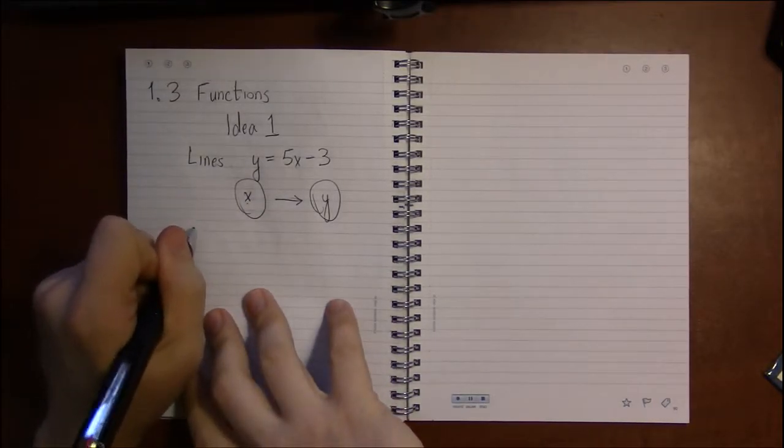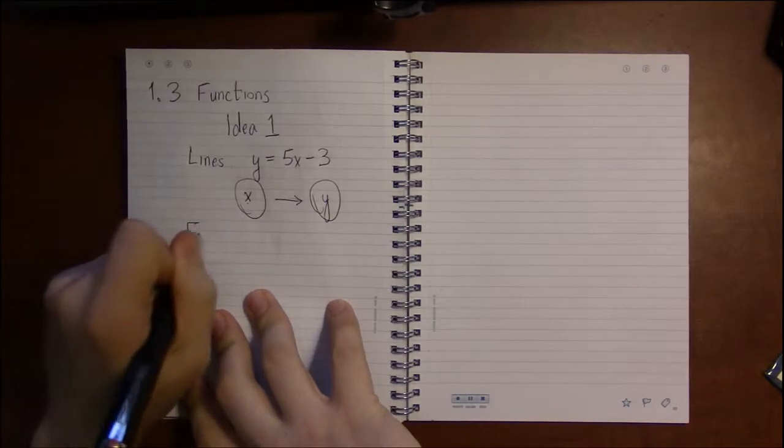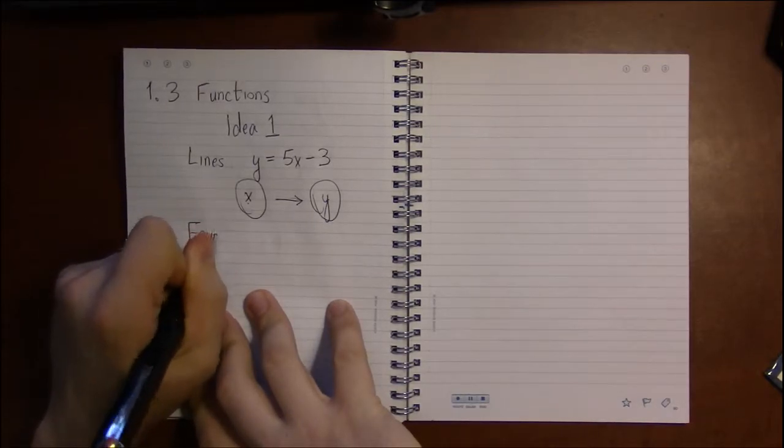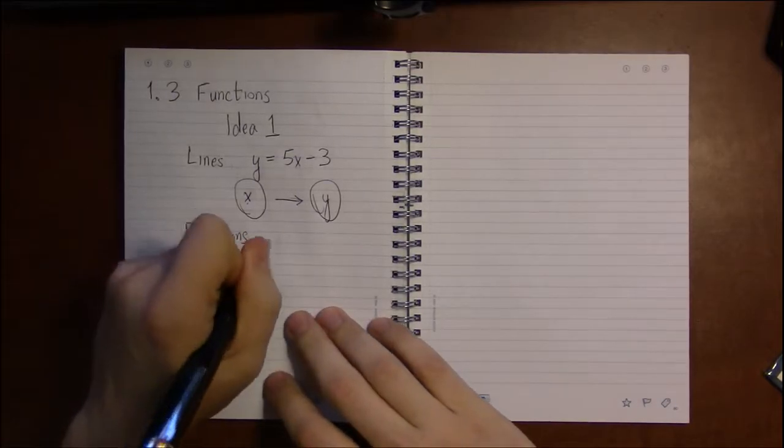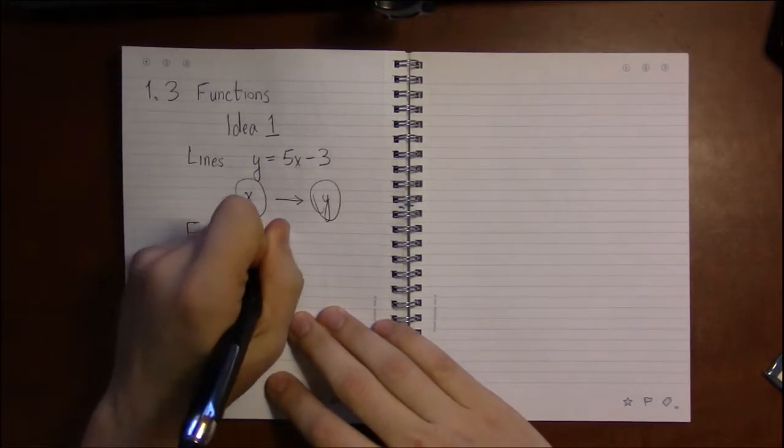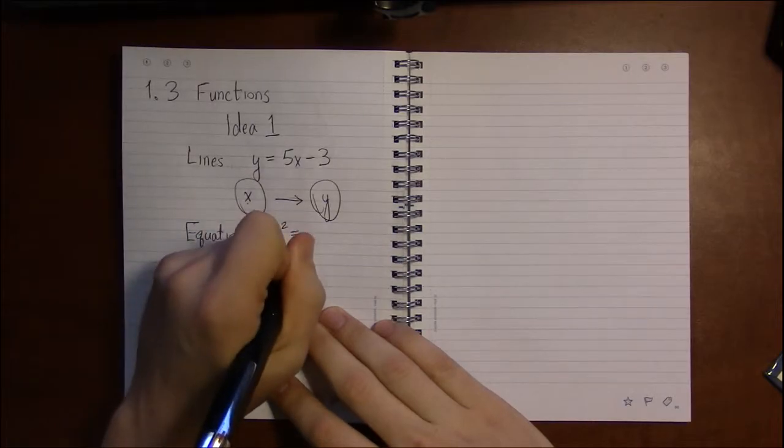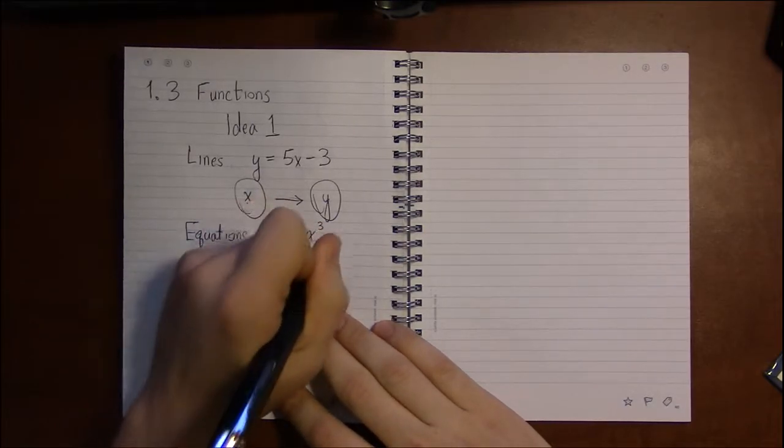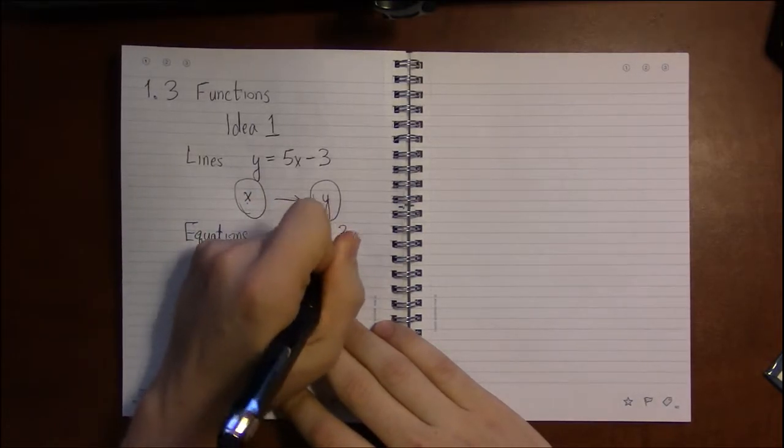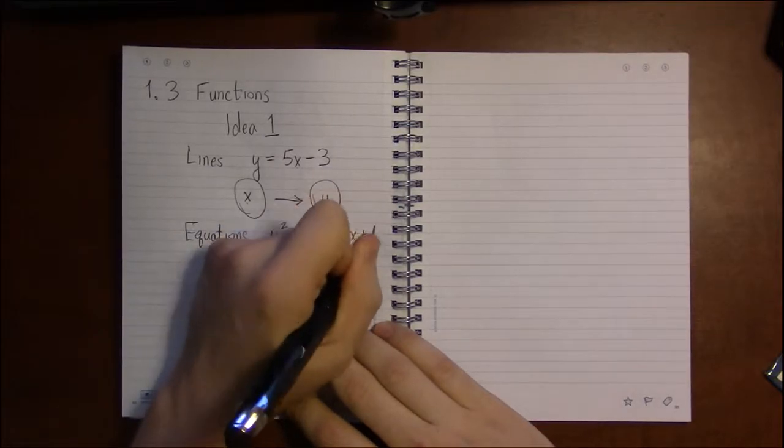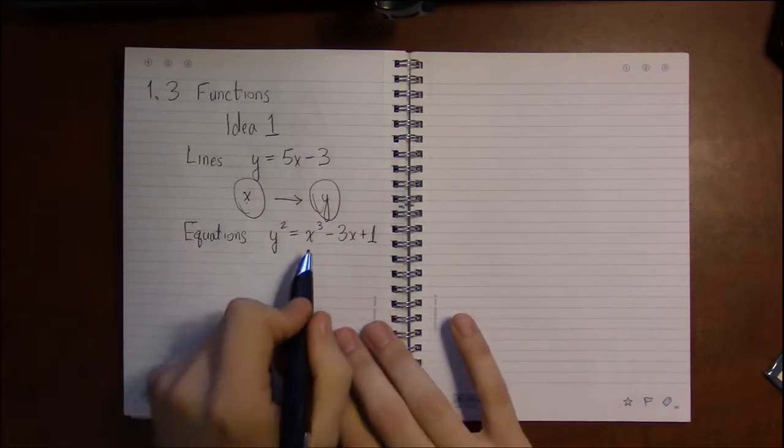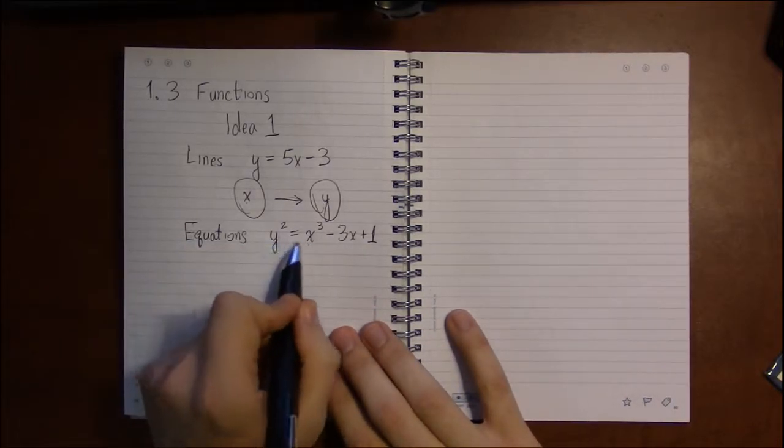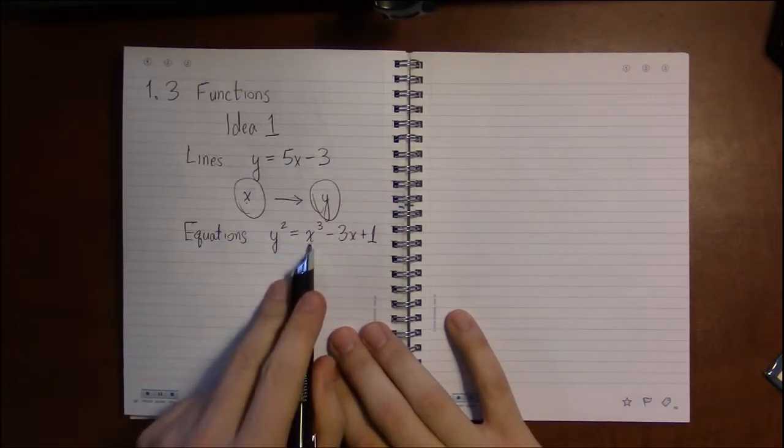But we were also talking about just general equations, so something like y squared equals x cubed minus 3x plus 1. This is a perfectly fine equation and it does relate two variables together—it relates x and y together.